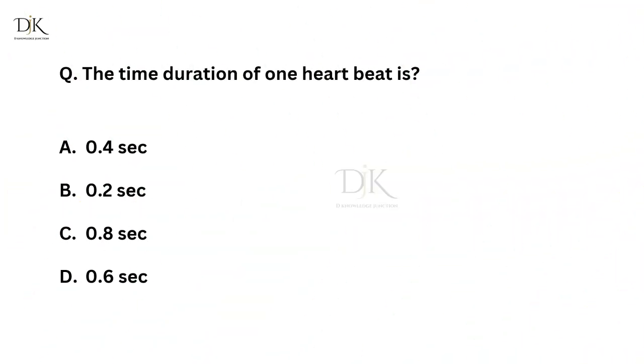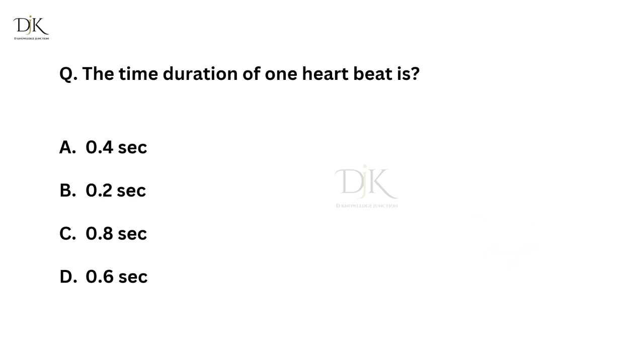The time duration of one heartbeat is? Right answer is 0.8 second.